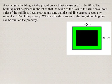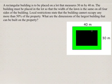In this problem, you're given that there is a rectangular building to be built on a lot that measures 30 meters by 40 meters. The width of the lawn — meaning the width from the edge of the property to the building — has to be the same on all four sides. The local restrictions state that the building cannot occupy any more than 50% of the property. The question asks: what are the dimensions of the building that can be built on the property?